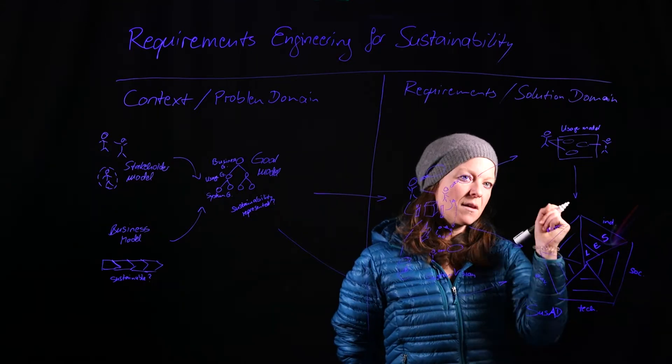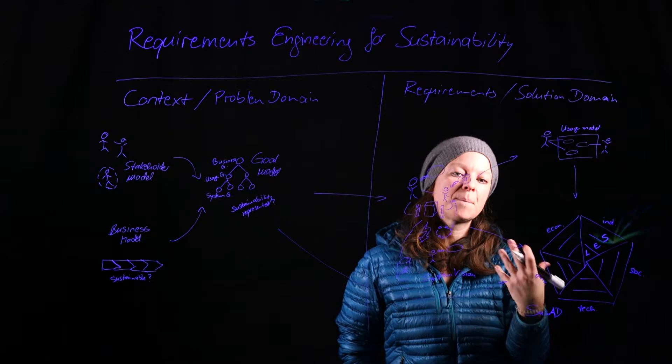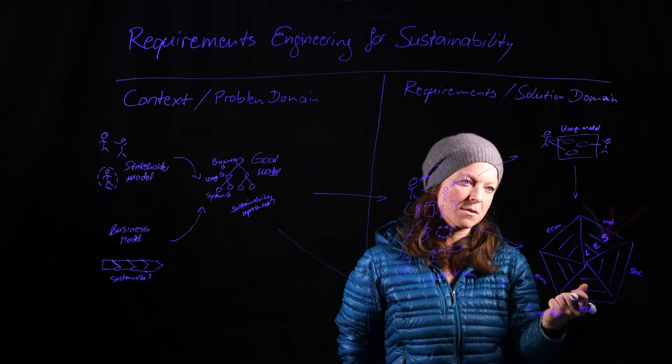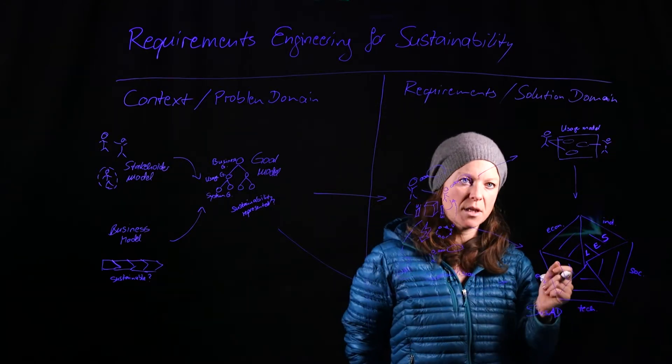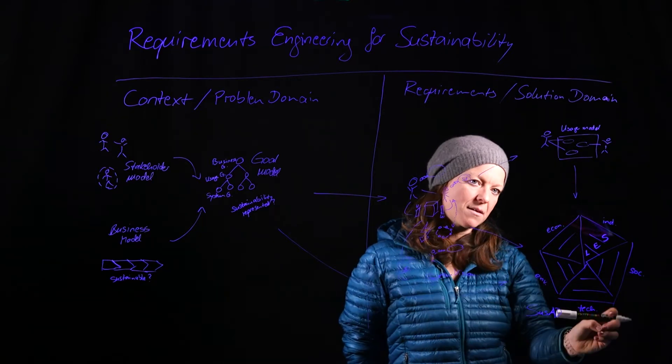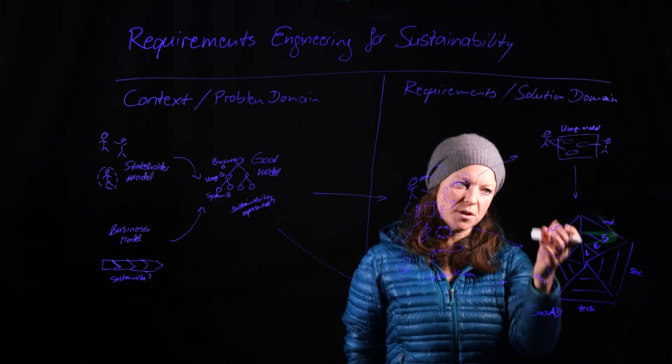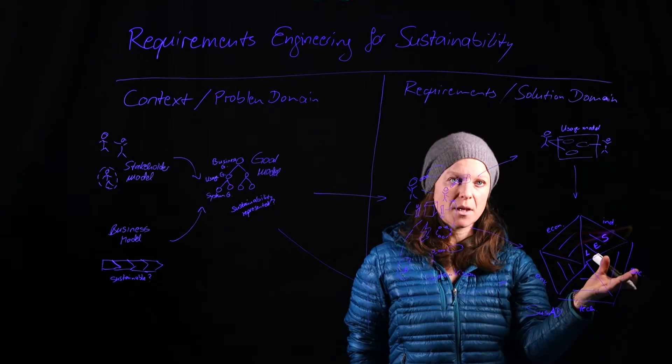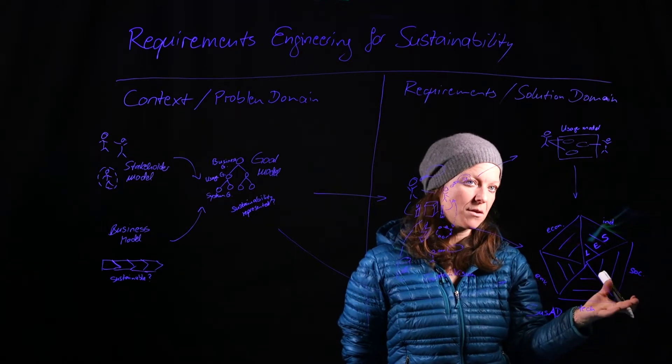The enabling effects are the effects that are made possible by the usage of the system. So what does this system enable the user to do, and what effects does that create as an impact in the environment, for the economy, in the social community, the immediate community?